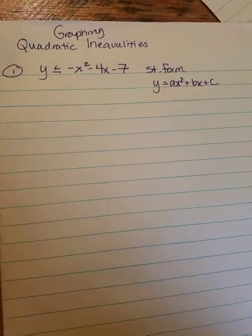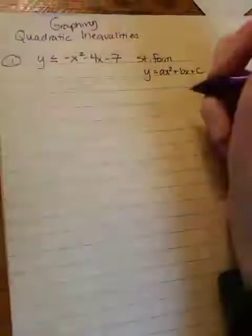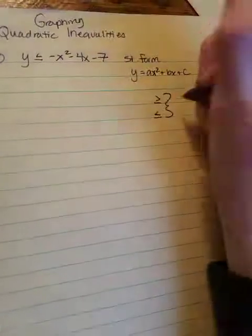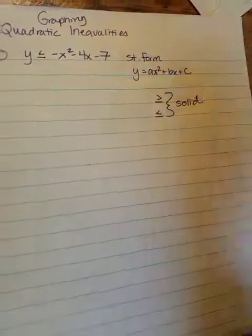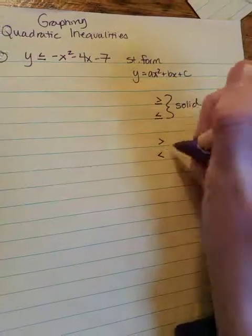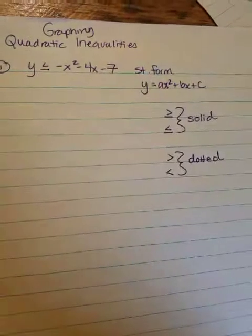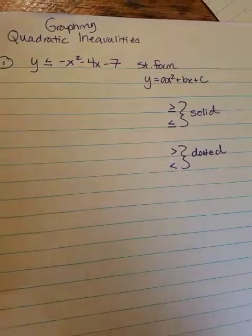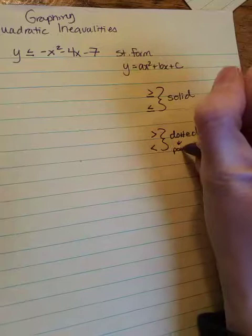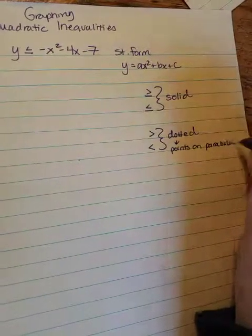So things I want you to remember, this is just like when we graphed linear inequalities, so lines. If you have a greater than or equal to or a less than or equal to, as you'll remember when we did this with lines, your parabola is going to be solid. No dashes. If it is greater than or less than, it is going to be dotted. And that means any point on the parabola, if it's dotted, would not be a solution.